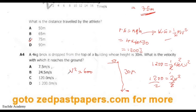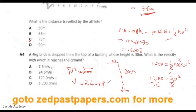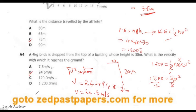Taking the square root of 600 gives v ≈ 24.495, which to one decimal place is 24.5 metres per second. The answer is B.